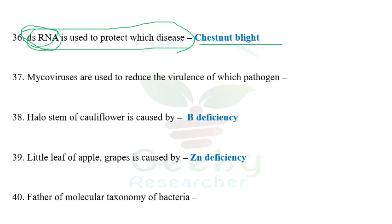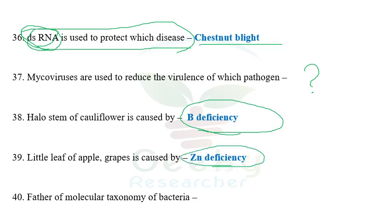Double-stranded RNA used to protect plants: the answer is chestnut blight. The next question: mycoviruses are used to reduce the virulence of which pathogen — I don't remember the answer; if you know, comment below. The next question: hollow stem of cauliflower is a boron deficiency. Little leaf of apple and grapes is caused by zinc deficiency. Little leaf of brinjal is caused by phytoplasma. For non-parasitic and abiotic disorders, there will be at least two to three questions — go through physiological disorders to get easy marks.